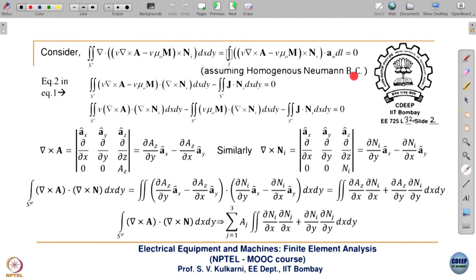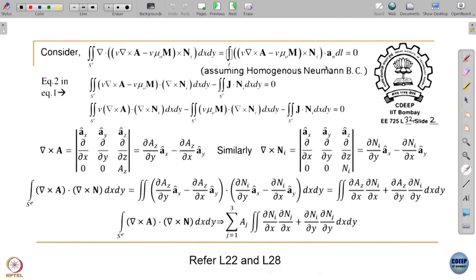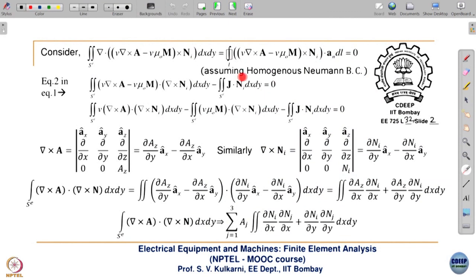If the homogeneous Neumann condition is not satisfied, there will be an additional term in our final matrix equation. Remember, at the element level, all inter-element contributions cancel because the a_N vectors are opposite. Only on the outermost boundary will this term be executed when we assemble all the elements. So homogeneous Neumann condition refers to the outermost boundary — inner inter-element segment contributions cancel.